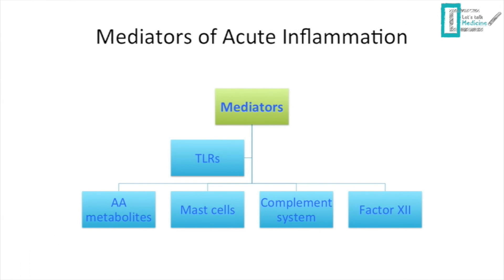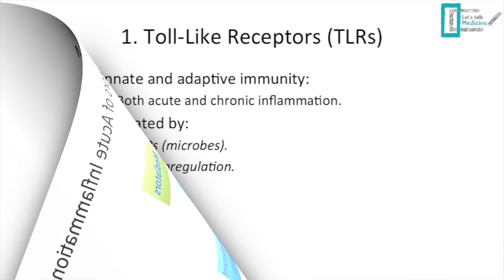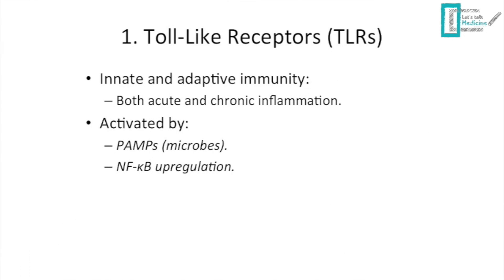Now moving to the important slide on mediators of acute inflammation. The first mediator is the toll-like receptor (TLR), which can be found in both innate and adaptive immunity — meaning it appears in both acute and chronic inflammation.